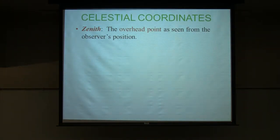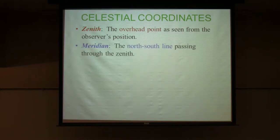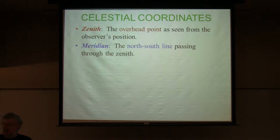The zenith — this is an Arabic term like many in astronomy — is the overhead point. Ever since the television company in the 50s and 60s started making televisions and calling them 'Zenith,' it's been a lost cause to reclaim the correct pronunciation. The meridian is the imaginary line that starts at the northern horizon, goes straight overhead through the zenith, down to the southern horizon. It stays put as the earth turns — it's part of your location — and the stars cross it during the night as the earth rotates.